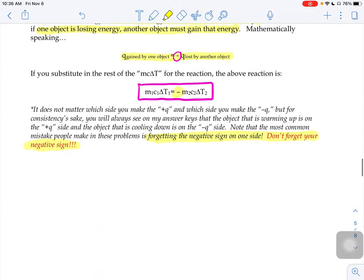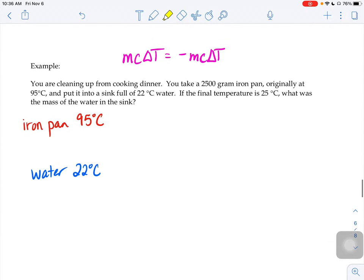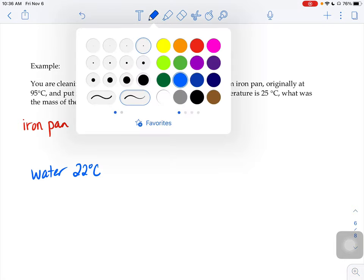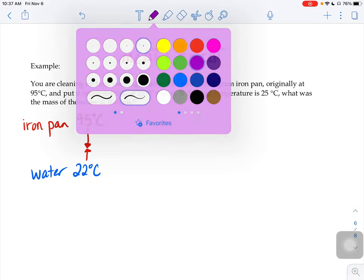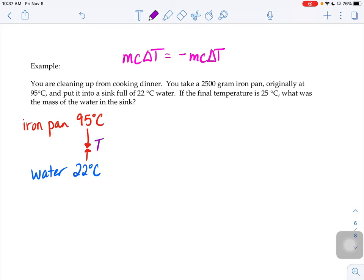So if you put a hot object into a cold object, the heat from that hot object is going to leave the iron pan and try to warm up the water. Well, as the water absorbs that heat energy, its temperature starts to come up. Eventually, they kind of meet at this temperature somewhere in the middle. Their final temperature is this somewhere in the middle, 25 degrees.